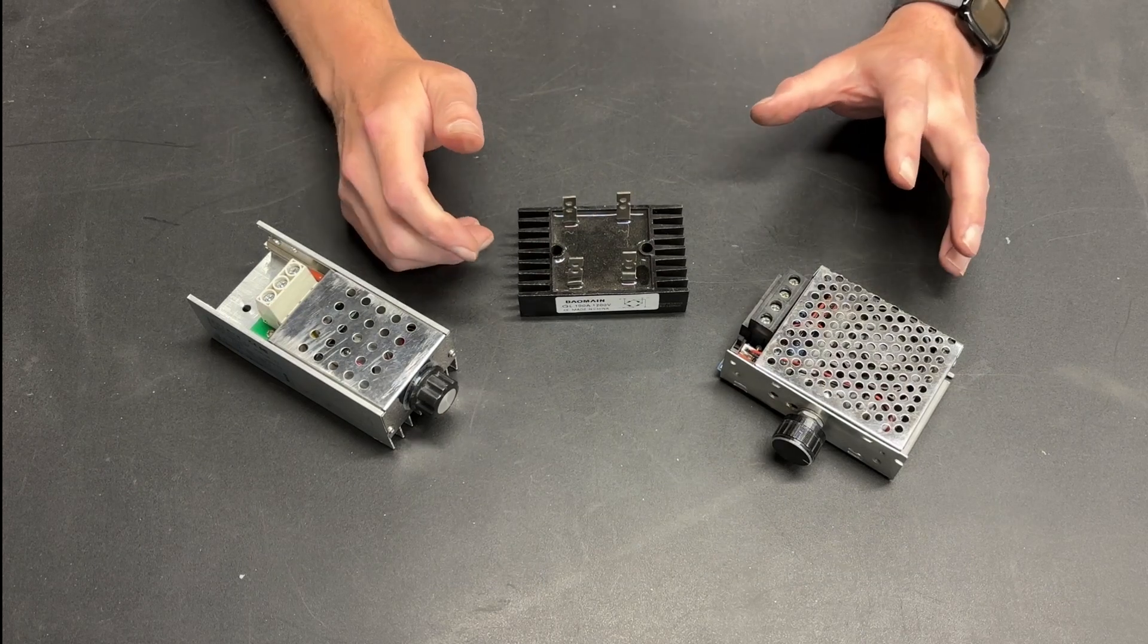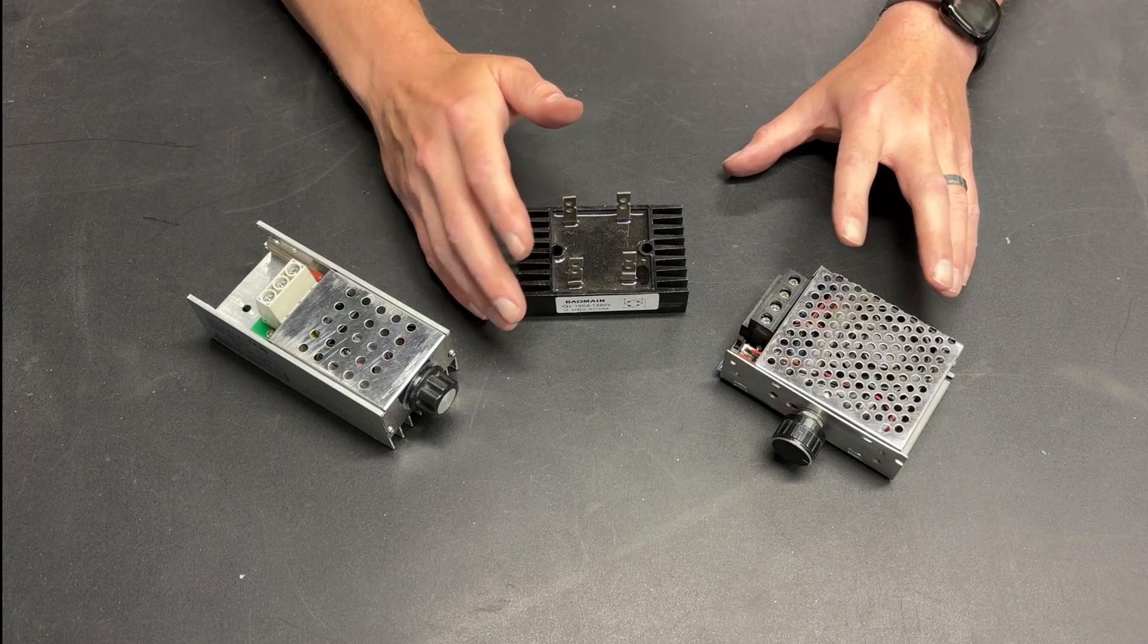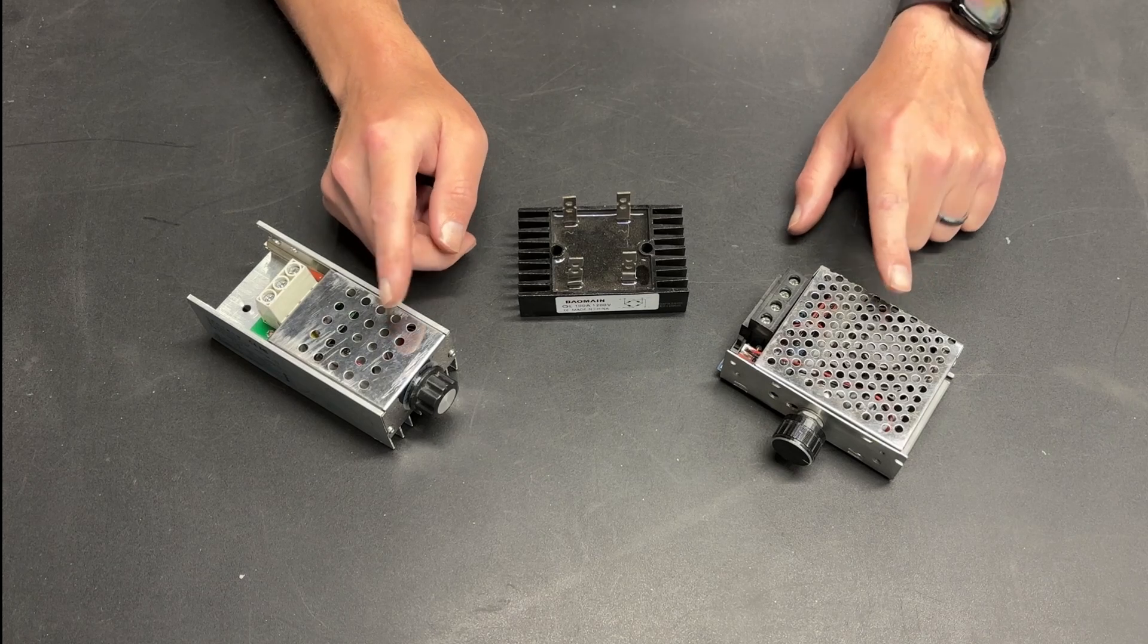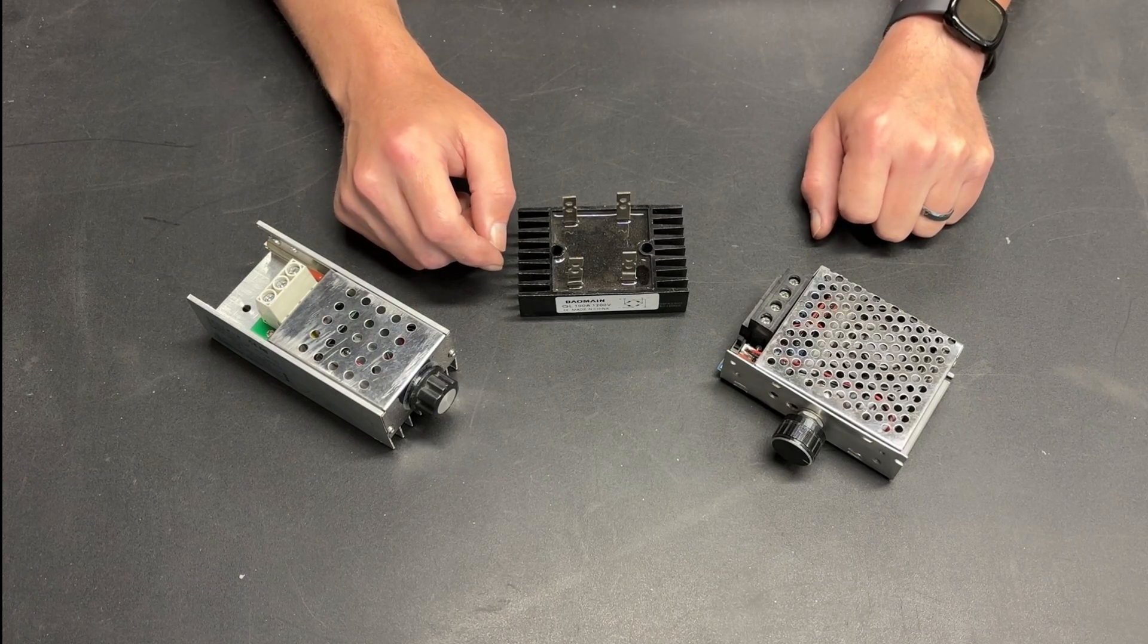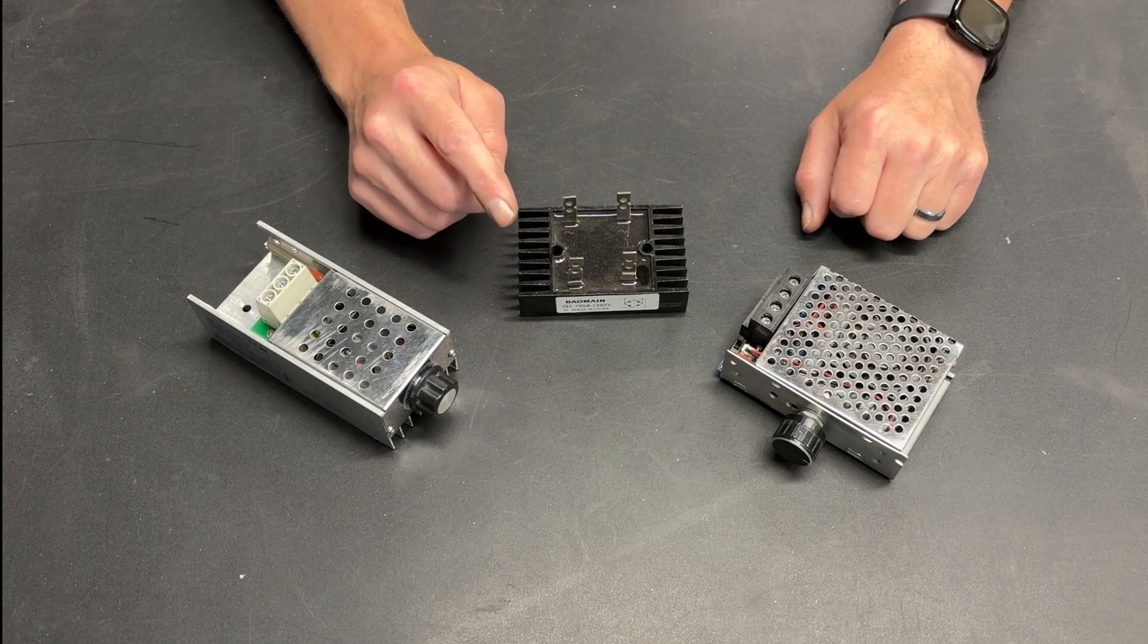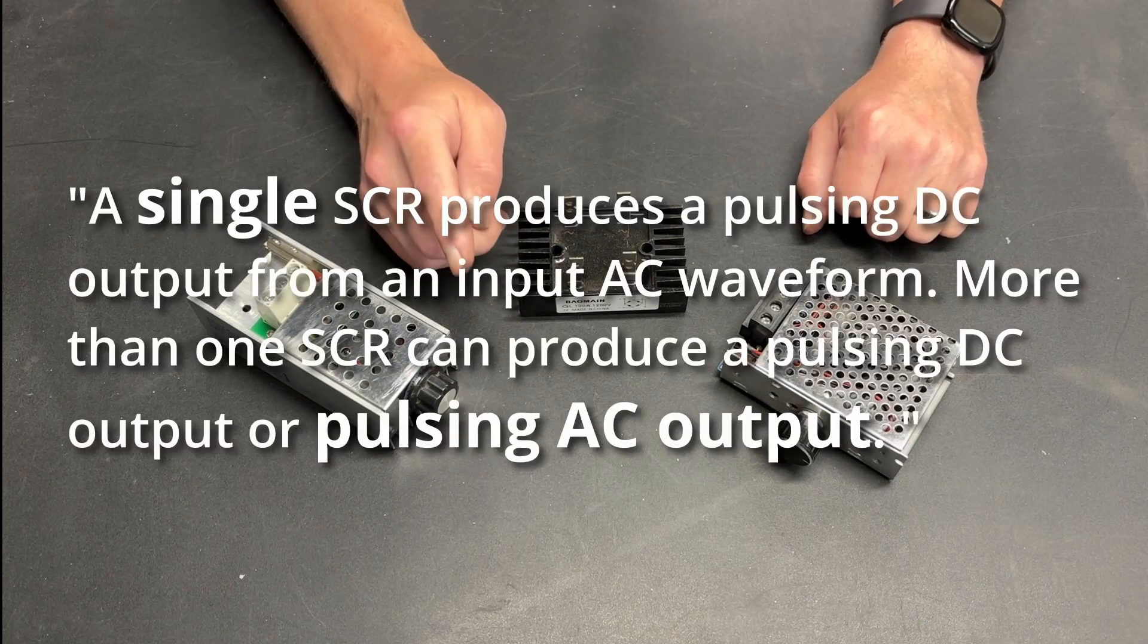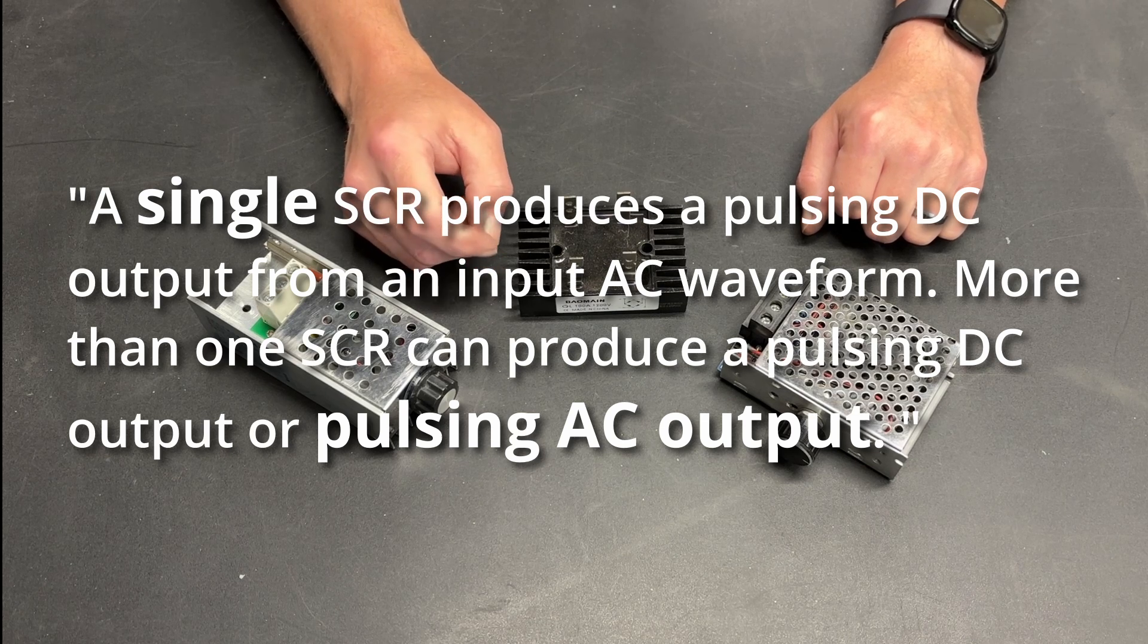Okay, that's a lot. There's a lot to unpack there. Ultimately, the statement that an SCR chip produces DC is correct. But again, these are labeled as SCR voltage controllers, and they produce AC current. And there's one other thing that I found very interesting in the Google-specific definition. It says, A single SCR produces a pulsing DC output from an input AC waveform.